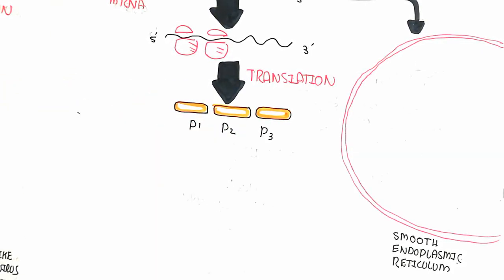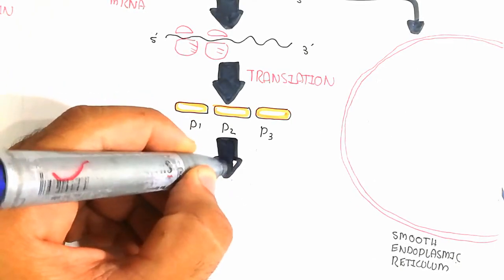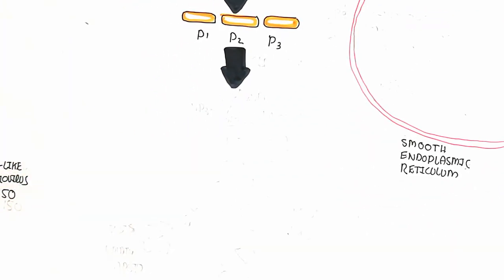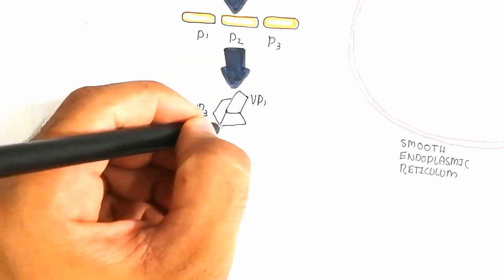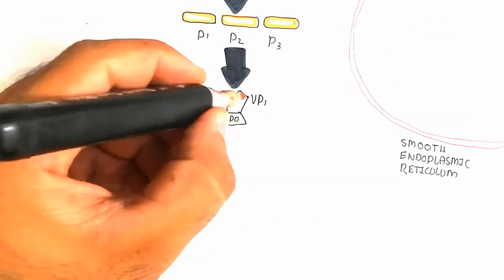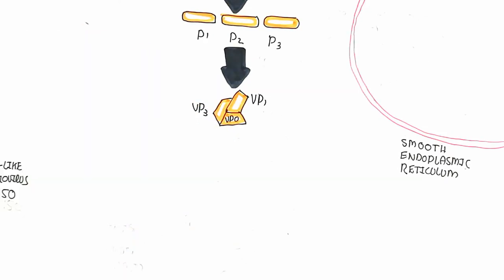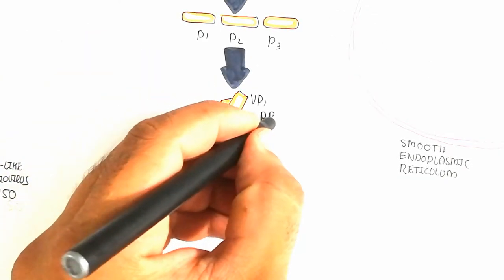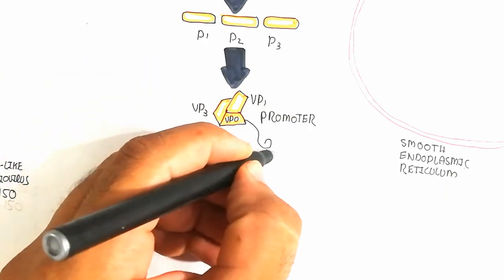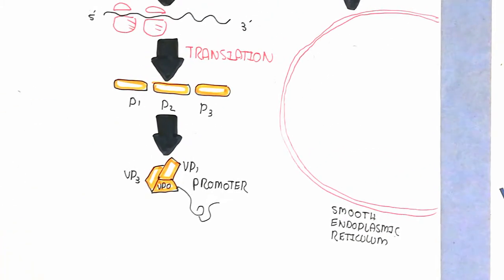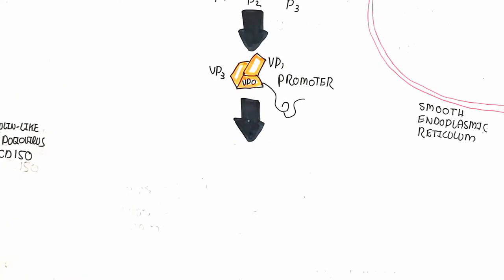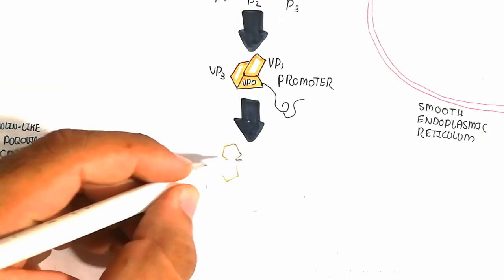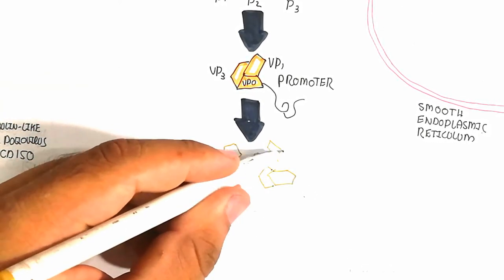This will lead to folding and VP3, VP1, and VP0 are formed. In this way, here is the promoter region which is contained. This will lead to forming a pentamer, the 40S. This pentamer is combined together to form 75S.